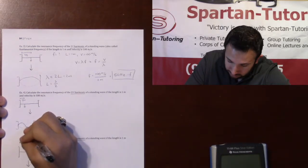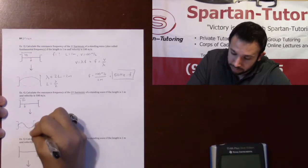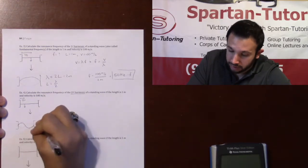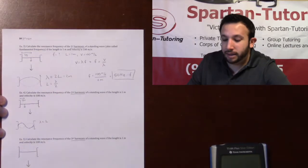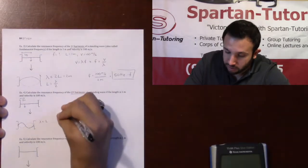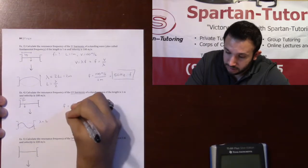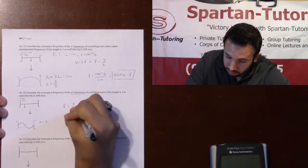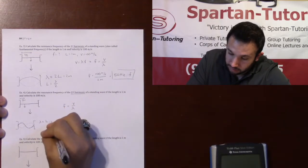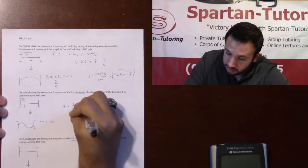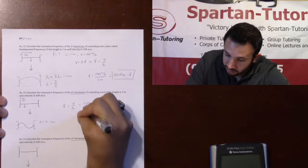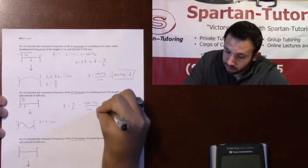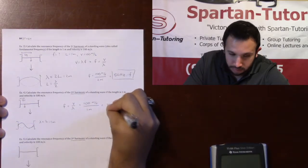Now, if you take a look at this, my wavelength is now 1L. Lambda is equal to L, which means L is equal to lambda. So, if you want to find your resonance frequency, this is equal to V over lambda. It's going to be 1 meter. So, this is going to be 100 meters per second divided by 1 meter, and that comes out to 100 hertz.